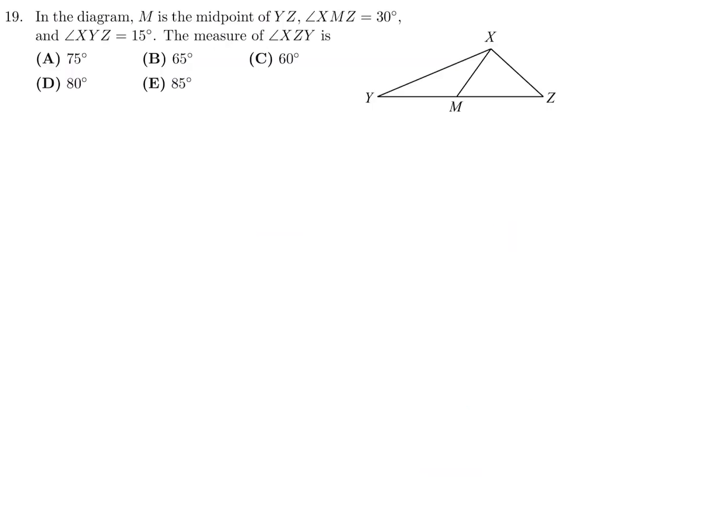In the diagram, M is the midpoint of YZ. Angle XMZ is 30 degrees. And angle XYZ is 15. What is the measure of angle XZY? So they want this one. Well, this is going to be 150 since 180 minus 30. And then since that's 15 and that's 150, that has to be 15.